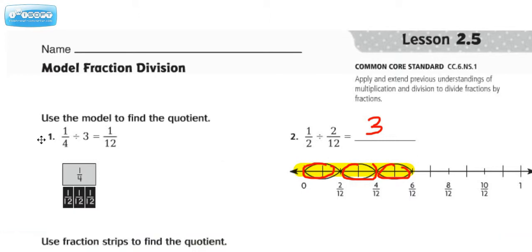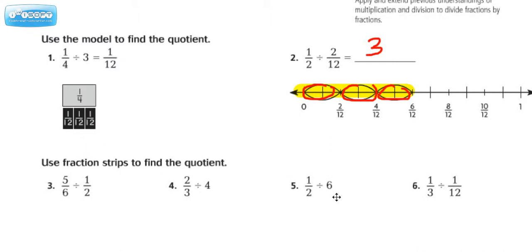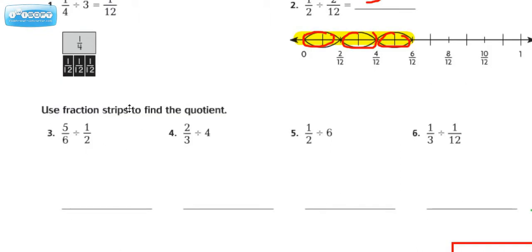I've already had some screencasts for some of the lower numbers like 1, 2, 3, and 4. We're going to take a look at number 5. Use fraction strips to find the quotient. They're giving us 1 half divided by 6.